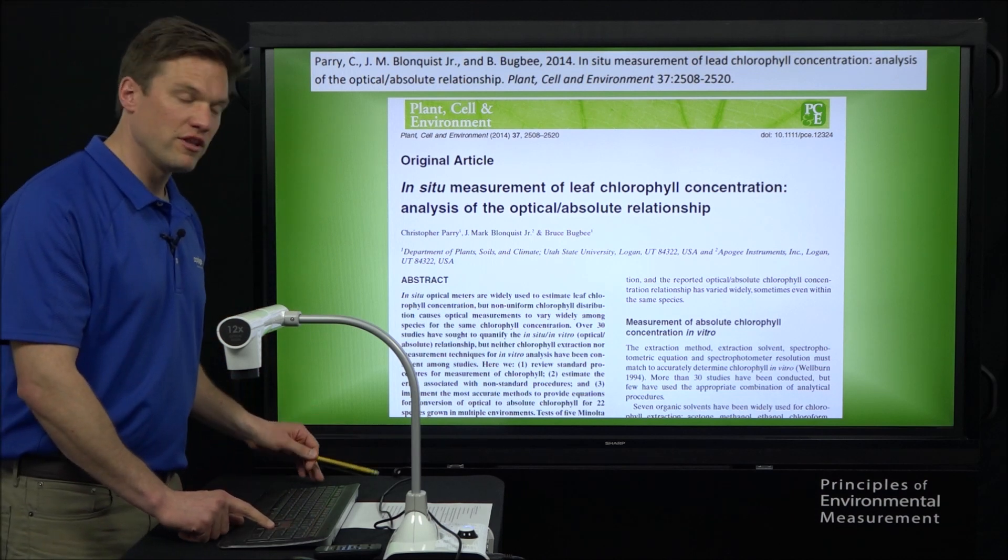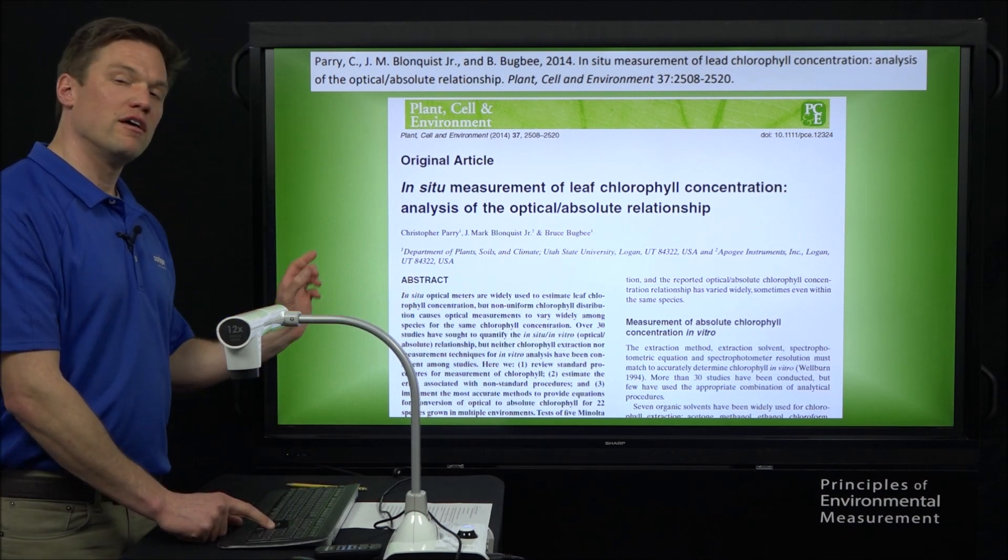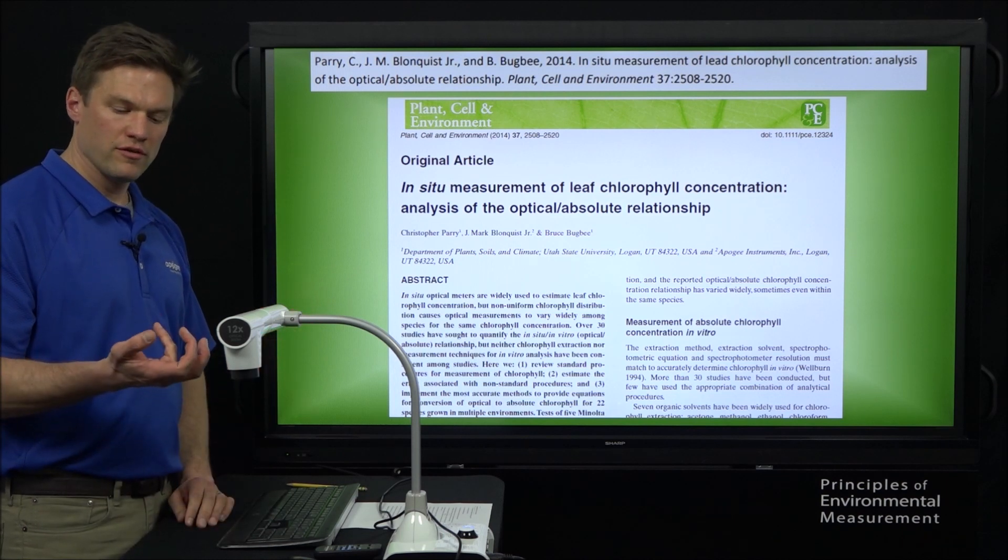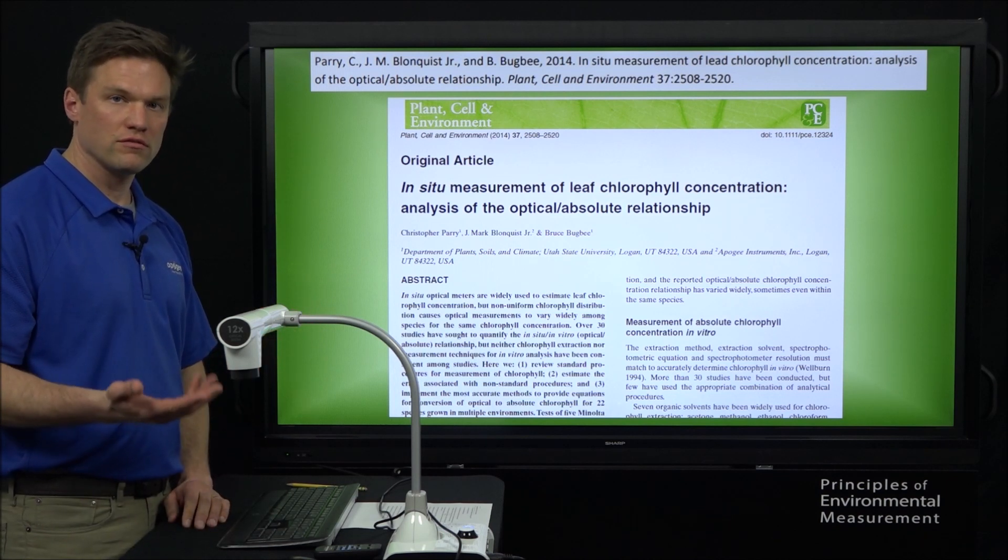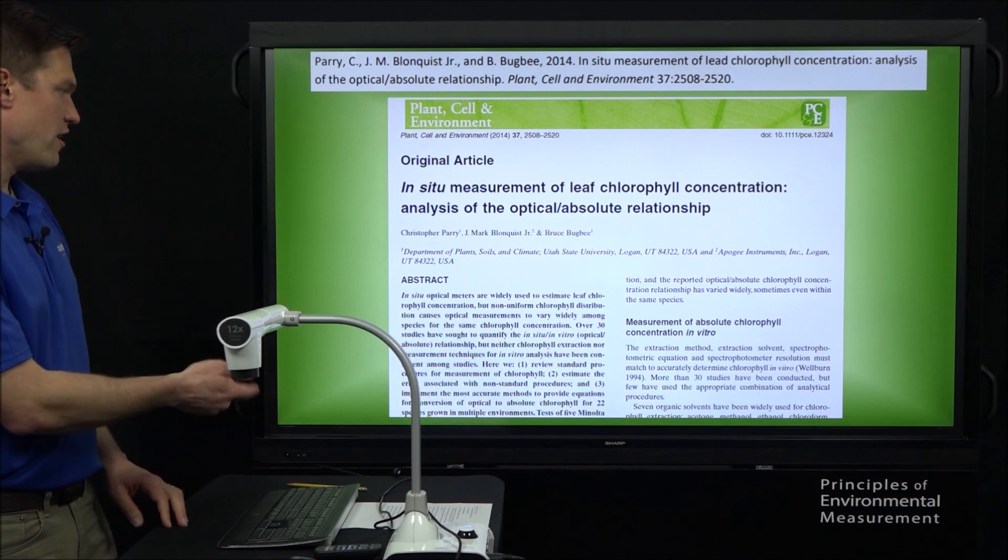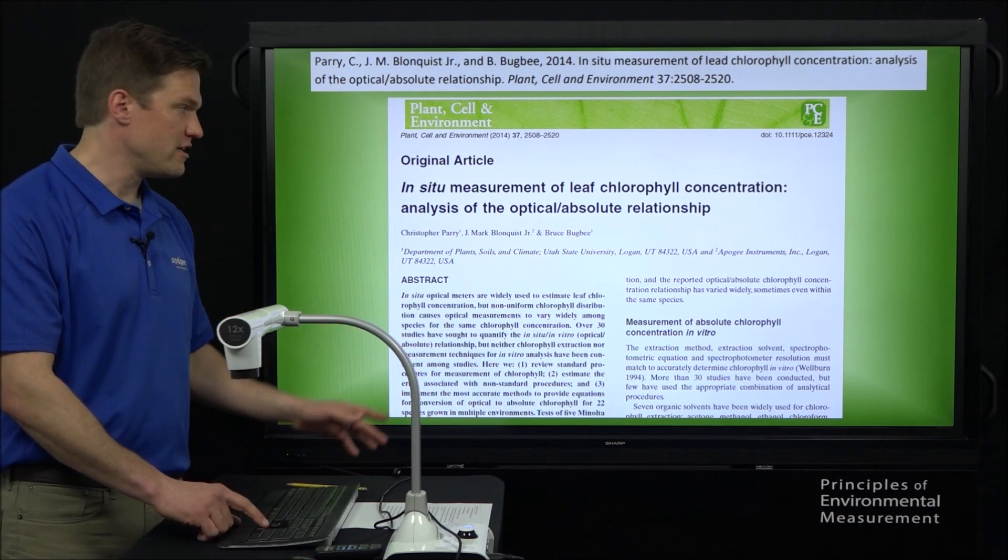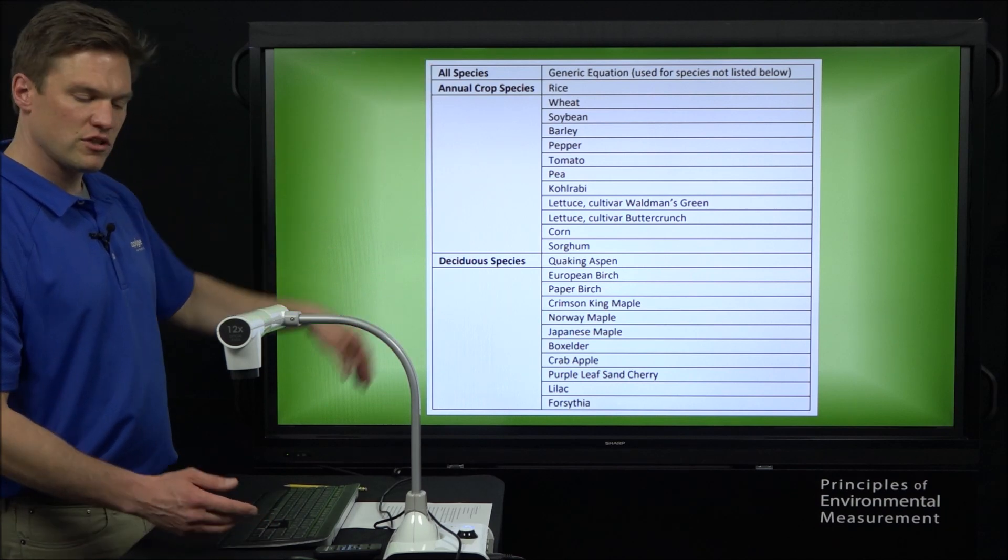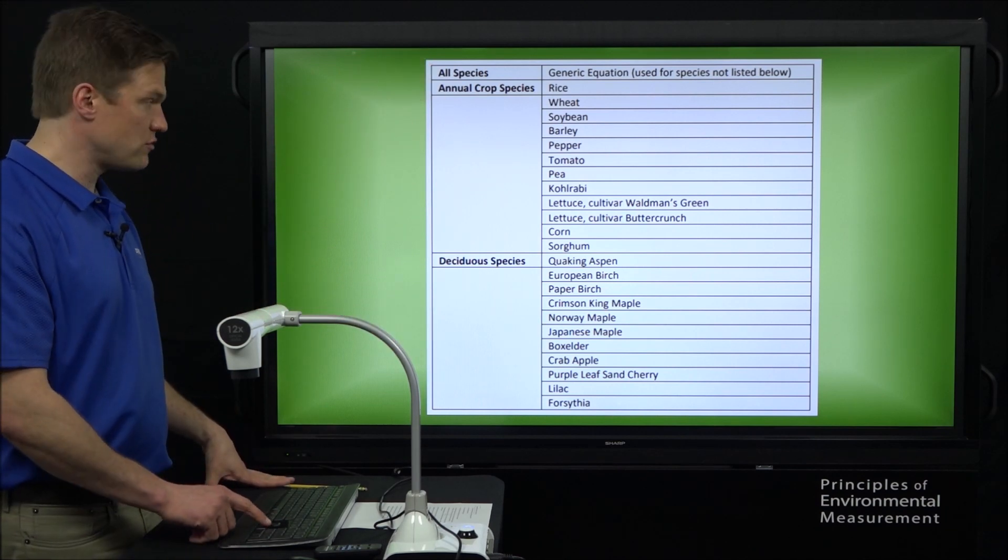You can read it at your leisure if you'd like. In the paper, they correlate that CCI value to the quantity of chlorophyll in the leaf, which they derive using laboratory techniques. They do this for 22 or 23 different species, all of which have coefficients loaded onto our meter.